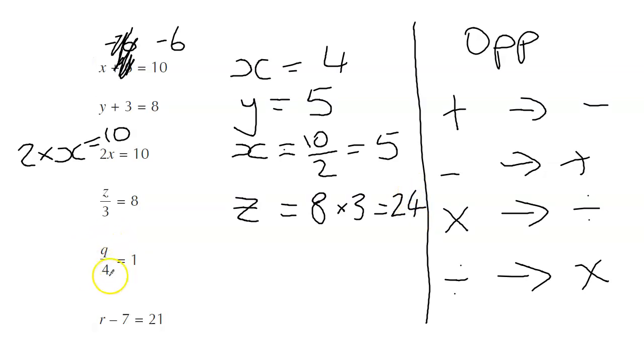Exactly the same thing here. We've got a divide, so we do the opposite of dividing by 4, which is times by 4. 1 times 4 is 4. And the last one here is r take away 7. The opposite of taking away is to add. So we're going to say that r equals 21 plus 7, which is 28.